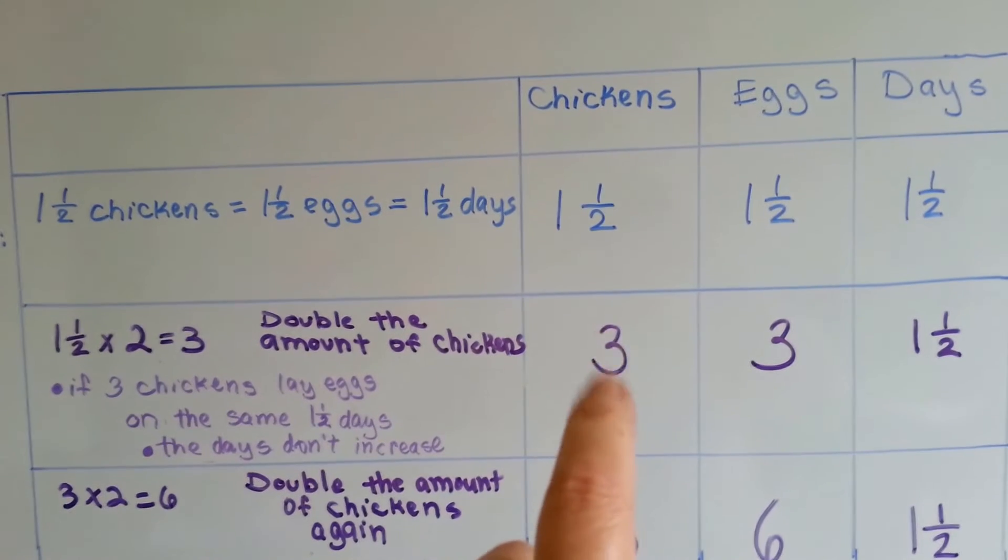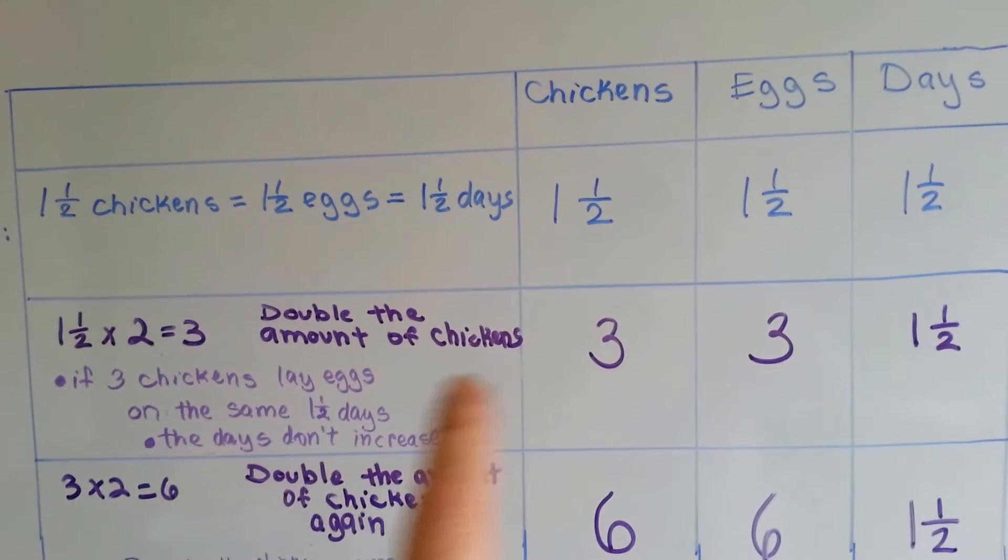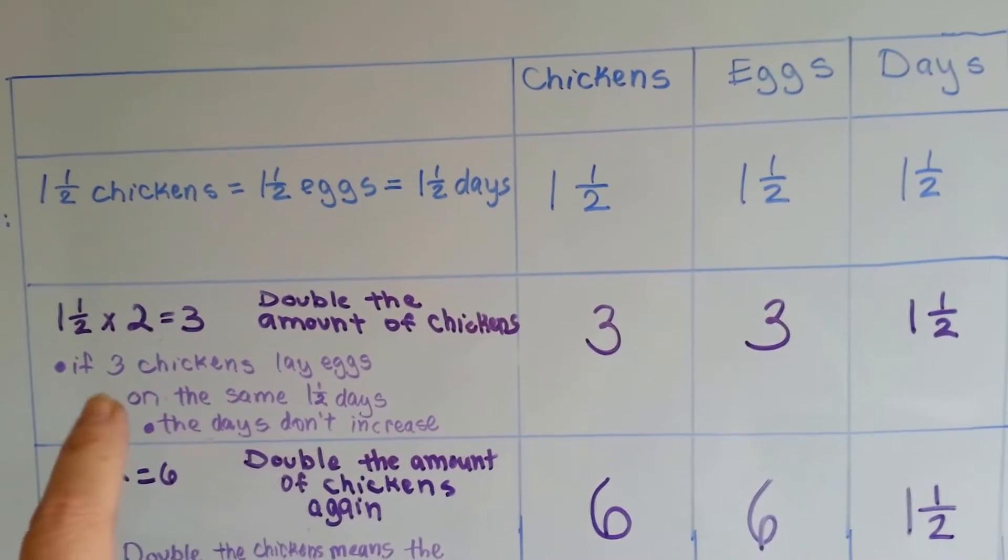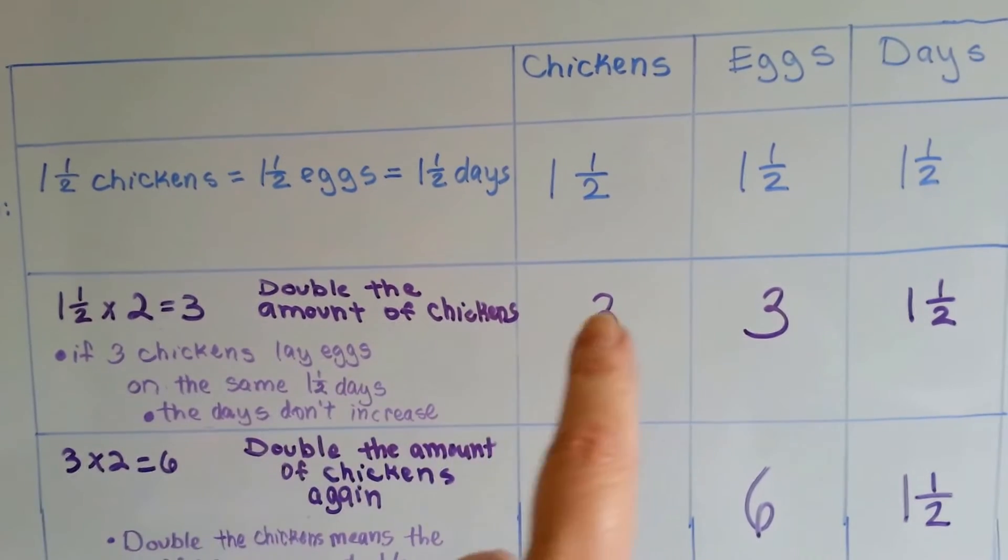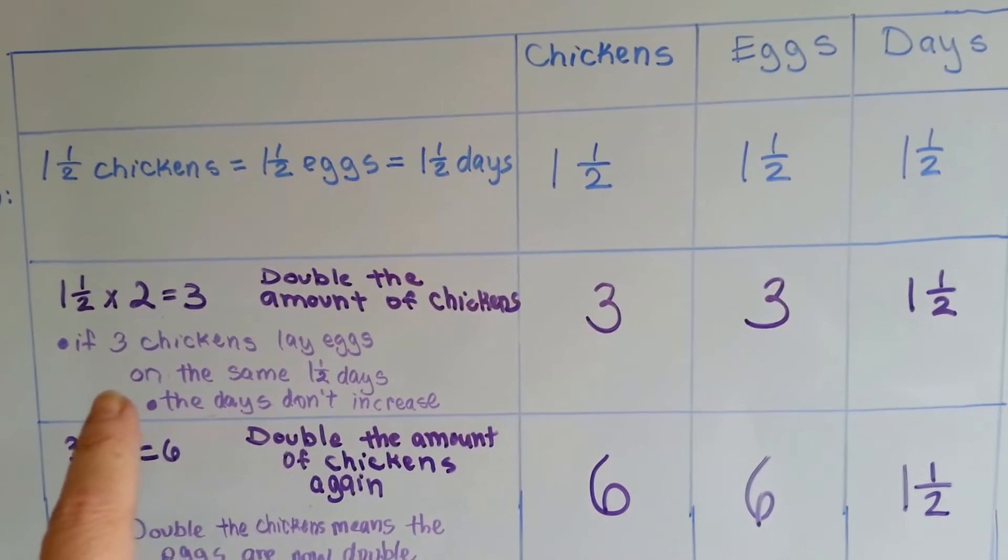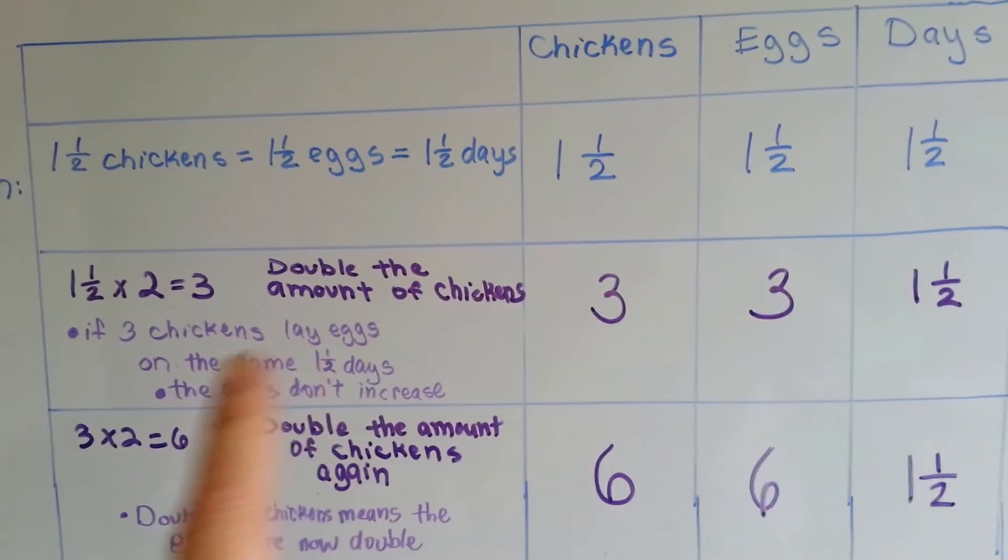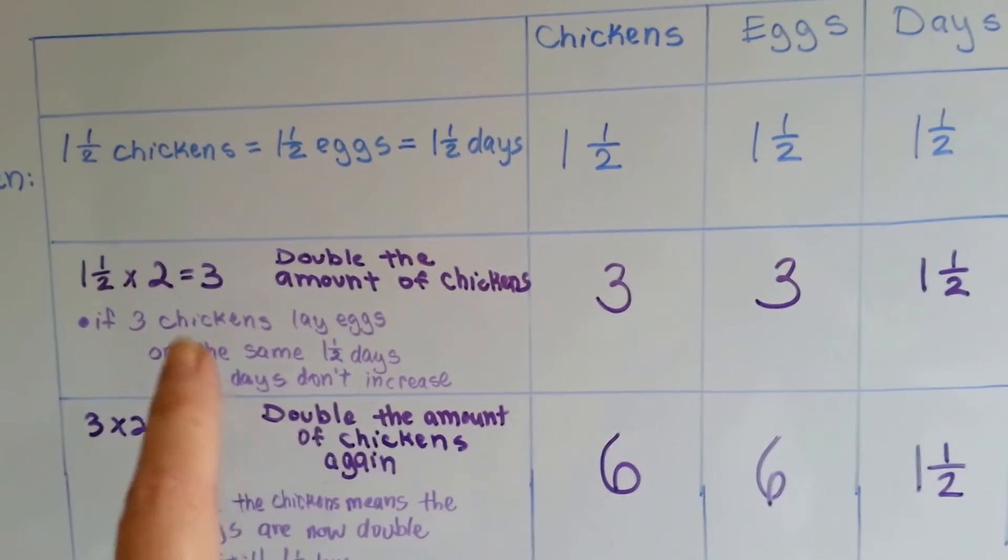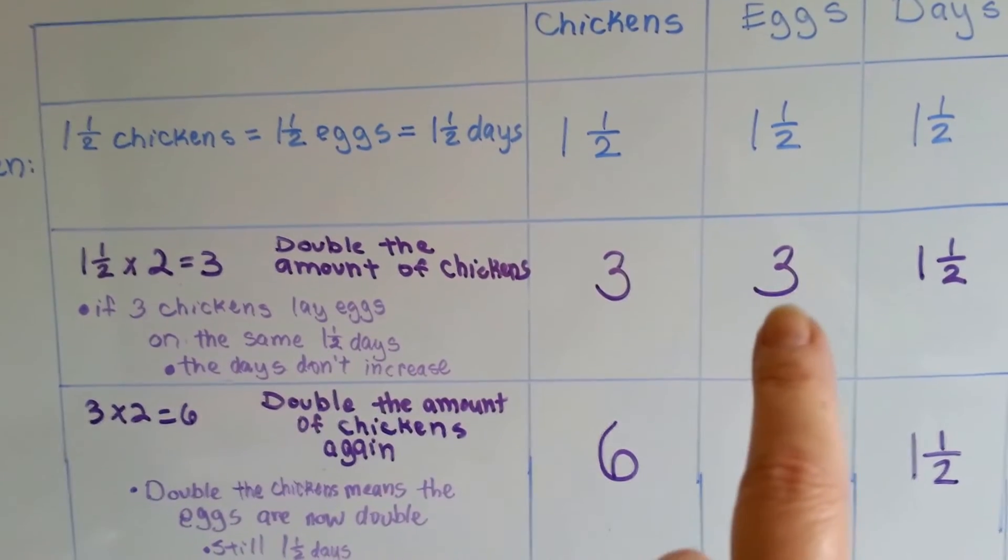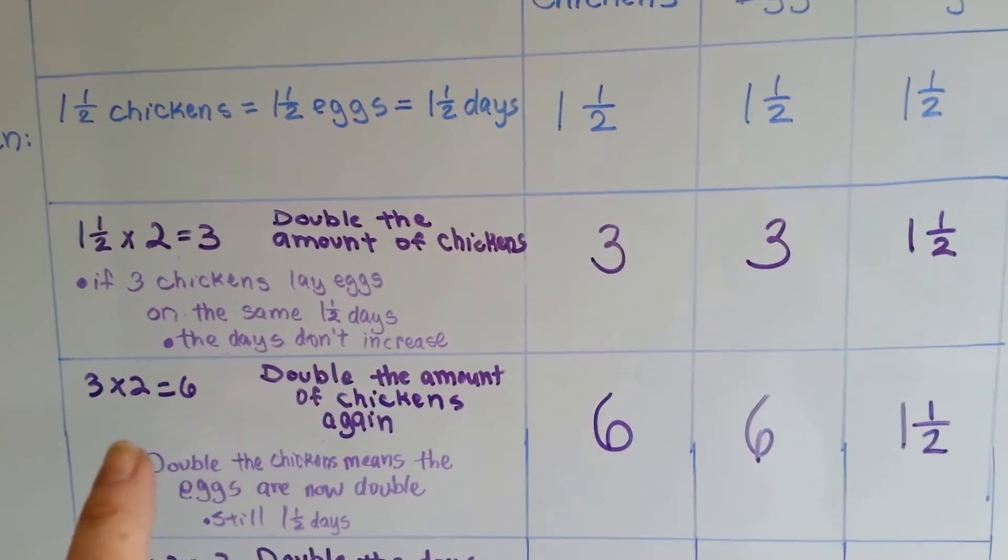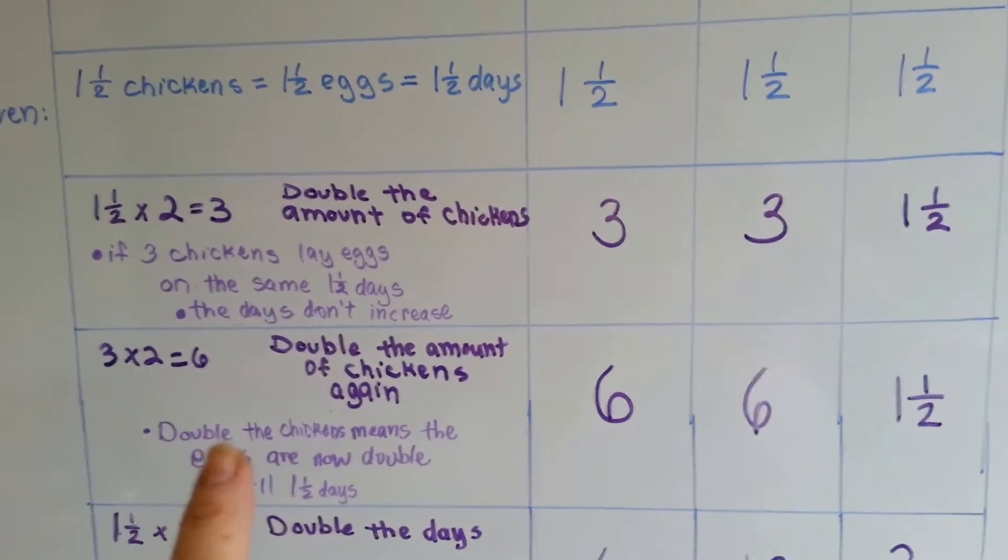So what we're going to do is we're going to double our chickens. And by doubling our chickens, we now have three chickens that are laying eggs, but on the same one and a half days. We didn't double the days. So the days don't increase, but because we doubled the chickens, the eggs are going to double.